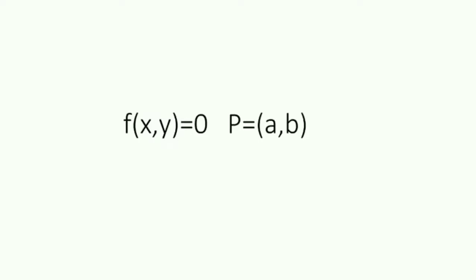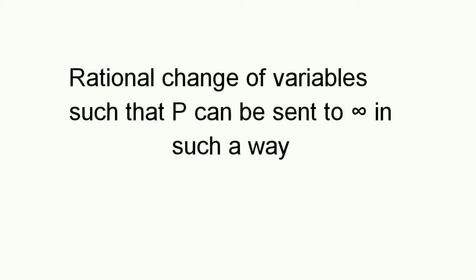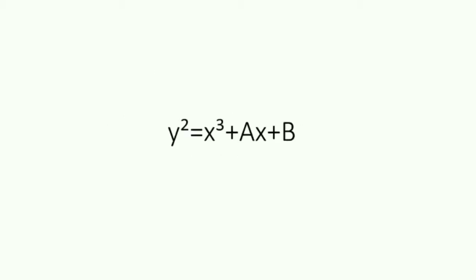Consider a degree 3 polynomial equation with two variables and obviously rational coefficients. Consider p to be a rational solution to the mentioned equation. Now an elementary fact must be noted. There can be a rational change of variable so that p is sent to infinity in a way such that the equation turns out to be this.